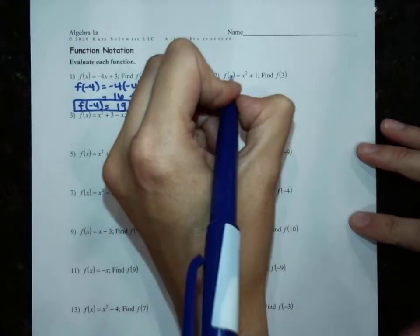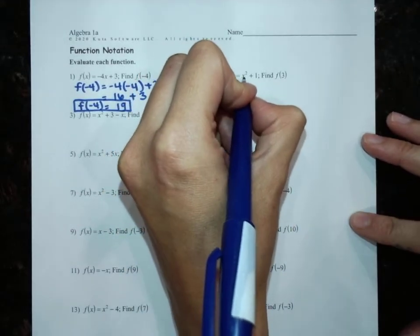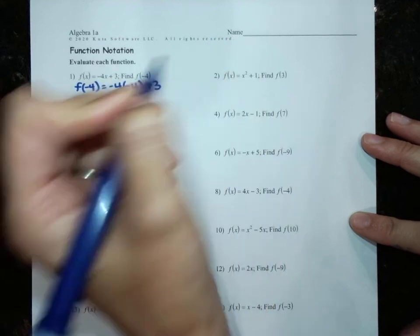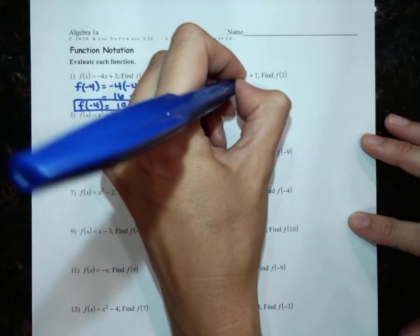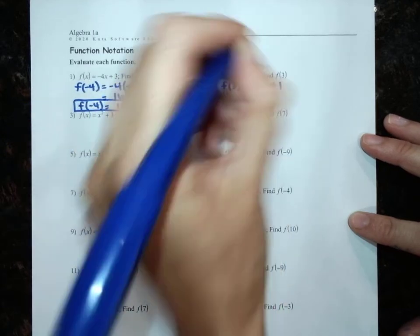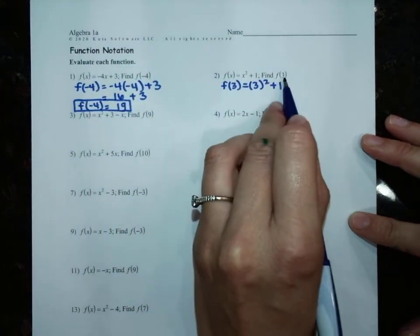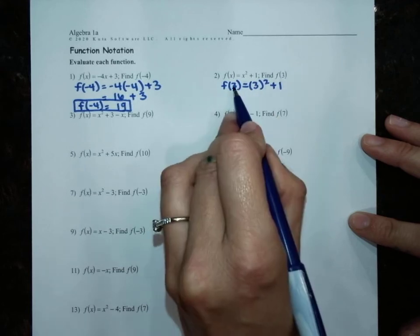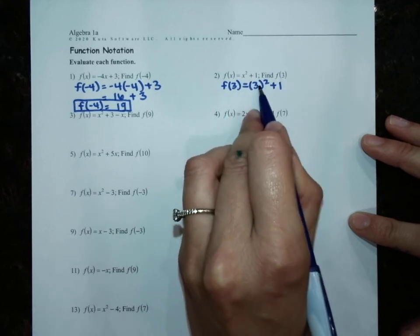Let's do one more. So when f of x equals x squared plus 1, they want us to find f of 3. f of 3 equals 3 squared plus 1. So we replaced x with 3 here, so we are going to replace x with 3 here.